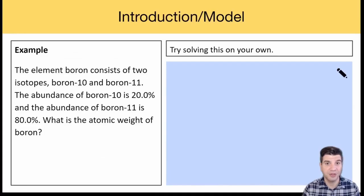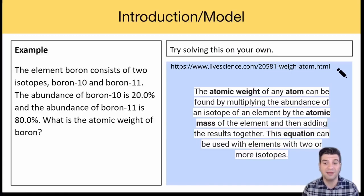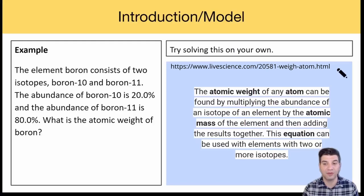The periodic table is a complete listing of all known elements. Each element has its own square in the periodic table. The square contains the chemical symbol for the element, the atomic number, and the atomic weight. The atomic weight of an element is the weighted average of all its isotopes. Here's an example. The element boron consists of two isotopes, boron-10 and boron-11. The abundance of boron-10 is 20%, and the abundance of boron-11 is 80%. What is the atomic weight of boron? Pause the video now if you want to try it independently. Keep watching if you want a hint.